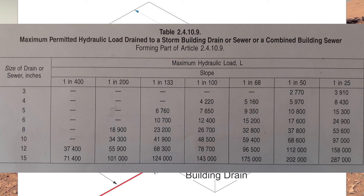If you didn't notice it before, look at the title of table 2410.9 — not only is it for storm sewers, it's also for combined building sewers.